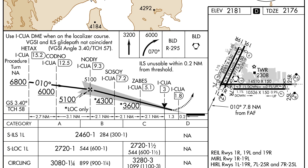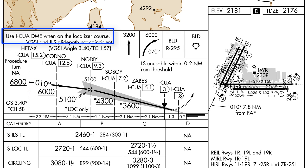Just like with the plan view of the approach, DME is depicted with the open D symbol with a number inside to depict the DME distance. Next to the D you will notice the nav aid that the DME is associated with. It's very important to check that you are using the proper DME nav aid. In some cases, DME may come from the localizer; in other cases from the VOR. Sometimes the DME may not be co-located with the approach navigational aid.